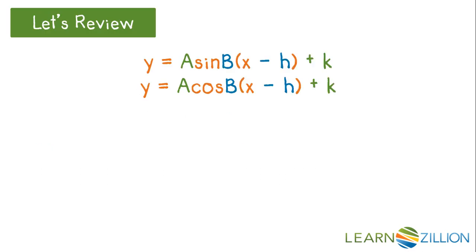First, let's review the general forms of the sine and cosine equations. Notice the placement of the parentheses around x minus h. B is factored out of the parentheses.